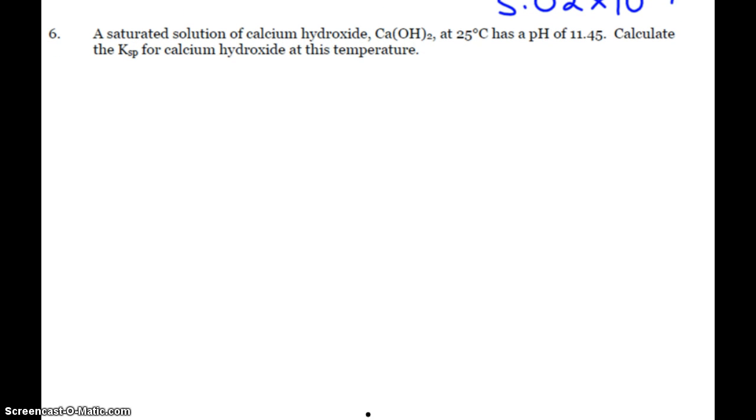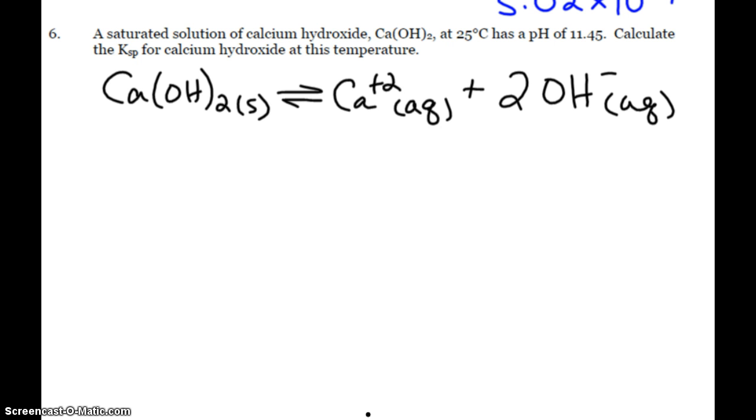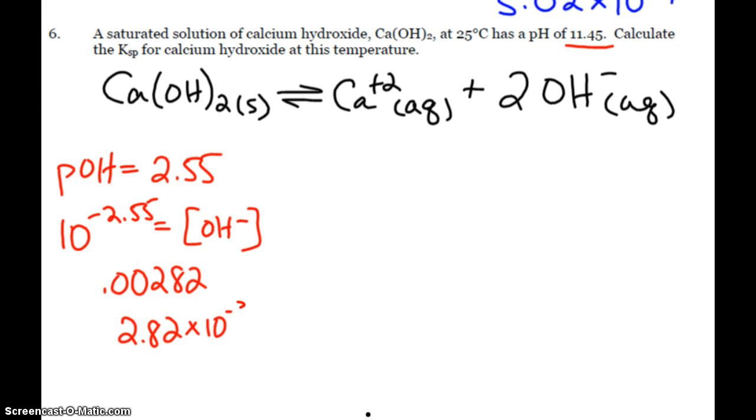So what about this? Here we see calcium hydroxide. Now when calcium hydroxide breaks apart, I get the calcium ion plus 2 hydroxides. Alright, so if my pH is 11.45, my pOH is 2.55. So 10 to the negative 2.55 will give me my hydroxide concentration, which is 0.00282, or 2.82 times 10 to the negative third molar.